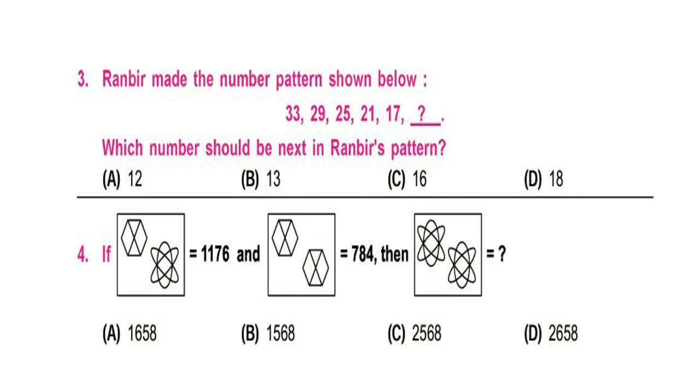Question 4. If first box is equal to 1176 and second box is equal to 784, then third box is equal to?